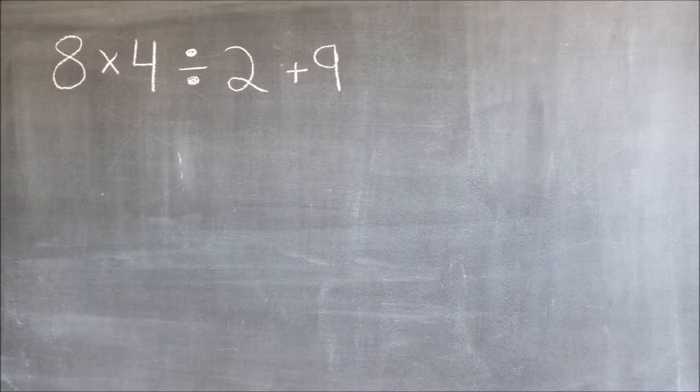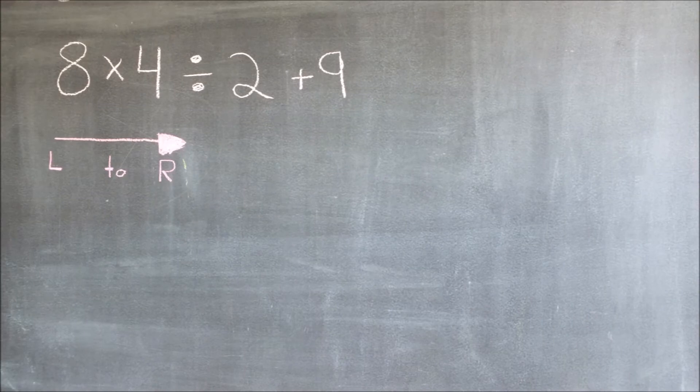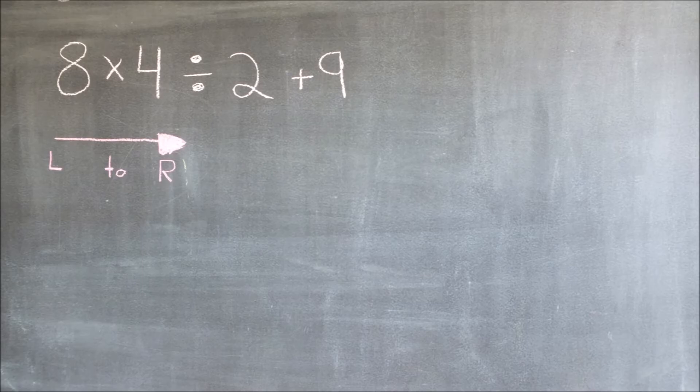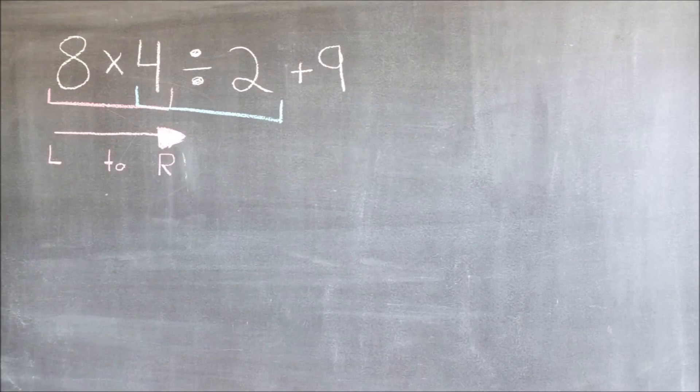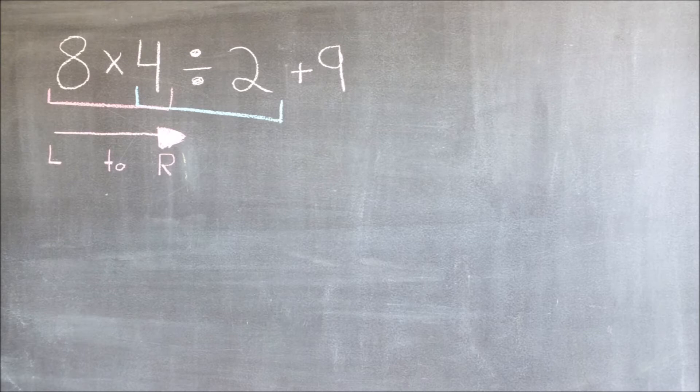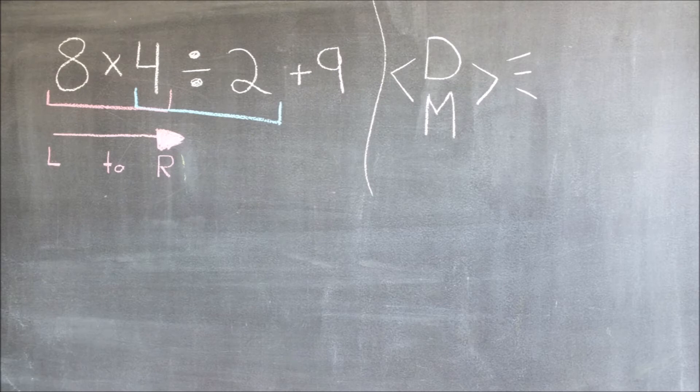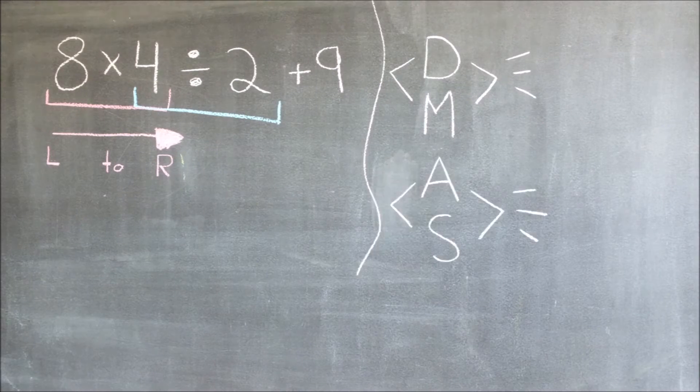Here is an example of an equation that uses both BEDMAS and the left to right rule. According to this rule, I have to do multiplication first and then division. But isn't that breaking the rules of BEDMAS? Not really, because remember how I told you division and multiplication are grouped together and so are addition and subtraction?